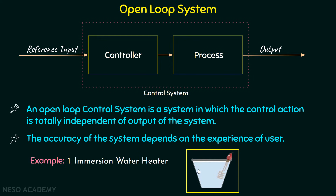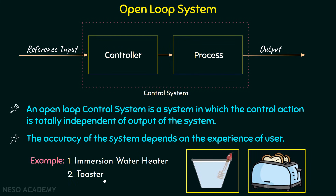One more classic example is a toaster. The toaster goes on increasing the temperature of the bread but it doesn't know when to stop heating. And that's why sometimes we find that the toast has burned. So now we are done with the introduction of the open loop system.